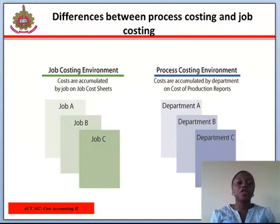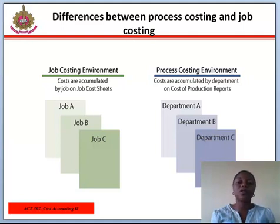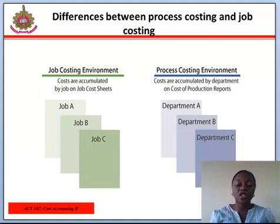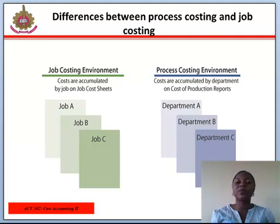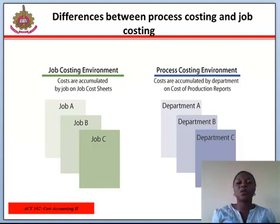Differences between Process Costing and Job Costing. Process costing is used in certain industries and varies from job costing in several ways. Costing helps companies track where money is spent in production and distribution. Process costing involves homogenous products, while job order costing involves a wide variety of different products. In process costing, costs are accumulated by process or department, while in job costing, costs are accumulated by individual jobs. In process costing, unit cost = process cost ÷ output, while in job costing, unit cost = total job cost ÷ output.